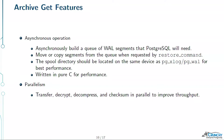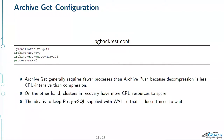For process max on archive get, archive get generally requires a lot fewer processes than archive push because decompression is by its very nature faster than compression. So generally you don't have to jack this up as much. On the other hand, it doesn't hurt much to have those extra processes available.